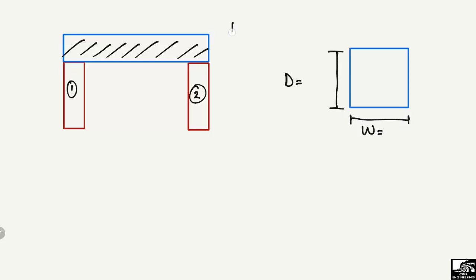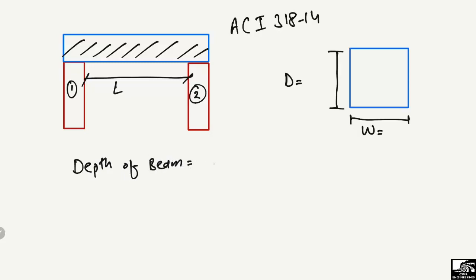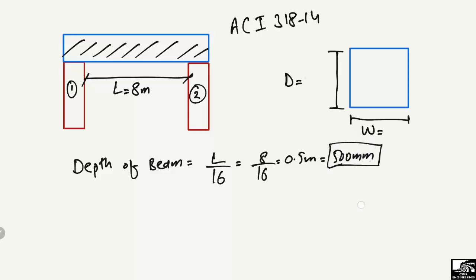According to ACI 318-14, the formula for the minimum depth of a simply supported beam is equal to L divided by 16, where L is the length of the beam. For example, if the beam length is 8 meters, then the minimum depth equals 8 divided by 16, which gives 0.5 meters or 500 millimeters.